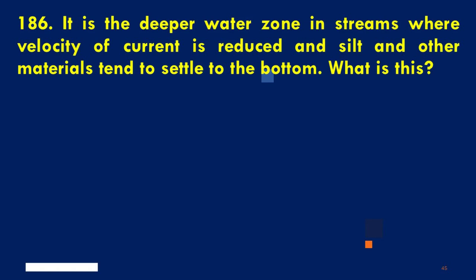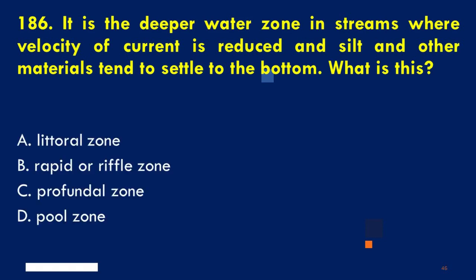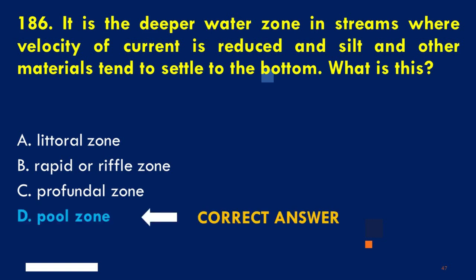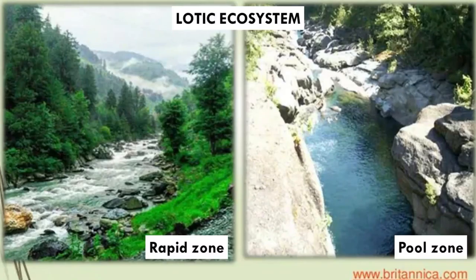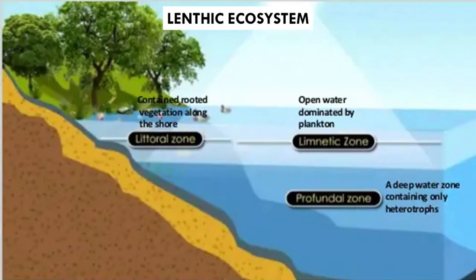It is the deeper water zone in streams where velocity of current is reduced, and silt and other materials tend to settle to the bottom. What is this? A. Littoral zone, B. Rapids or riffle zone, C. Profundal zone, D. Pool zone. The correct answer is D. Pool zone. The rapids or riffle zones are areas where the water is fast enough to keep the bottom clear of materials. The littoral zone is where aquatic rooted vegetation can be found. And the profundal zone is a deep water zone containing heterotrophs only.